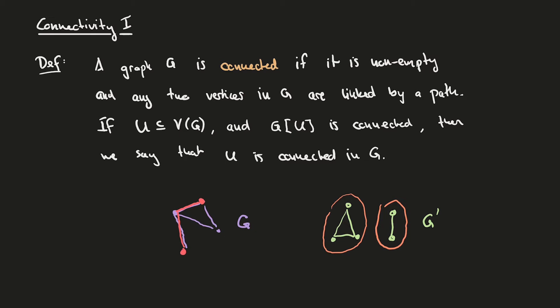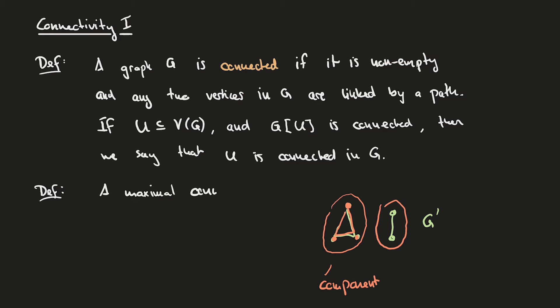If we redraw G prime for clarity, then we see that G prime has a natural subdivision. We can think of this triangle as being one part of G prime, and this edge as being another part. These parts are in fact the maximal connected subgraphs of G, or in other words, the largest subgraphs of G that are still connected. We call such maximal connected subgraphs the components of G.